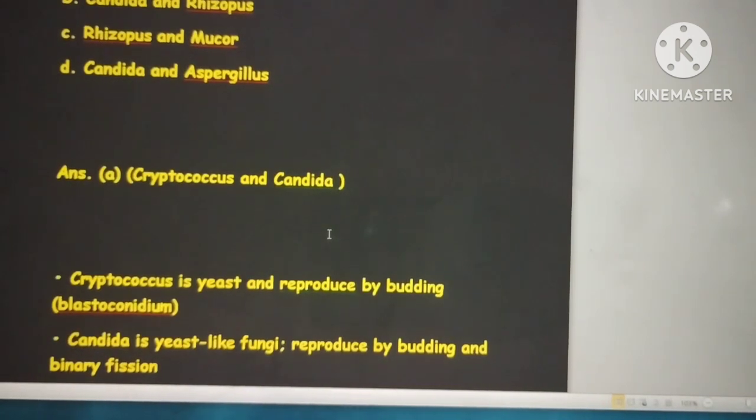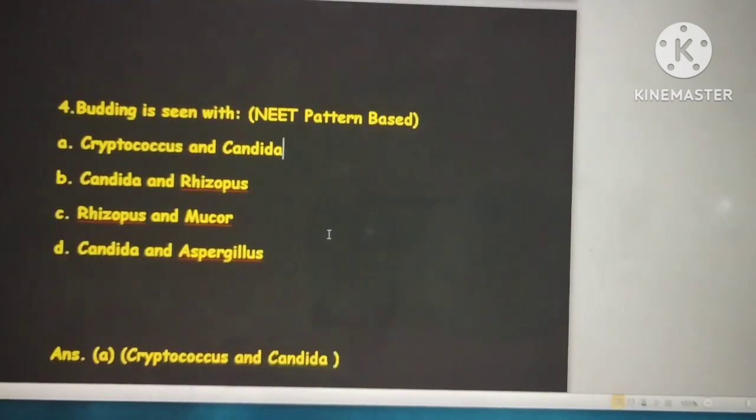Cryptococcus is yeast and reproduces by budding. Candida is yeast-like fungus and also reproduces by budding. Always remember if Candida is given, the term is gram positive budding yeast cell with pseudohyphae. This is the main term usually given for Candida.